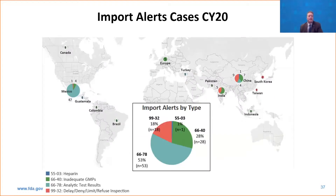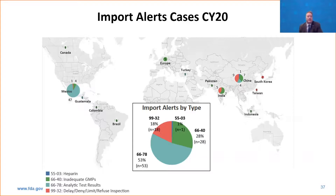We have issued import alerts for drug manufacturers all over the world because drugs for the United States come from all over the world. These different numbers and colors relate to the various adulteration provisions for why a firm has been put on import alert. Import alert 9932 is for firms that refuse an FDA inspection. The green ones are based on actual FDA inspections or records requests where CGMP violations warrant import alerts. Import alert 6678 is a new one implemented in 2020 — it's based on sample results where drugs cross the border. We coordinate with Customs and Border Patrol, sample the material, and if it's violative, we can place an entire facility on import alert. Mexico is the lion's share of these.